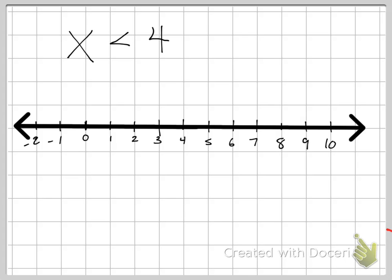It doesn't really matter what the variable is, but if it's an x, we're going to call the number line x, and we're going to go to the value 4 in this case.